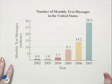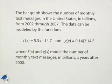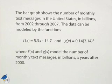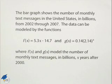Our next example will compare a linear function to an exponential function. The bar graph shows the number of monthly text messages in the United States in billions from 2002 through 2007. The data can be modeled by the functions f of x equals 5.3x minus 14.7, which is linear, and g of x equals 0.14 times 2.14 to the x power, which is exponential, where f of x and g of x model the number of monthly text messages in billions x years after 2000.